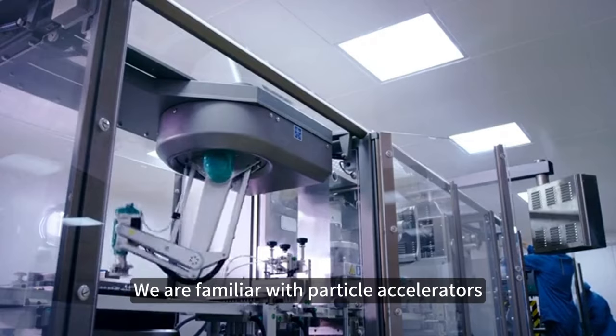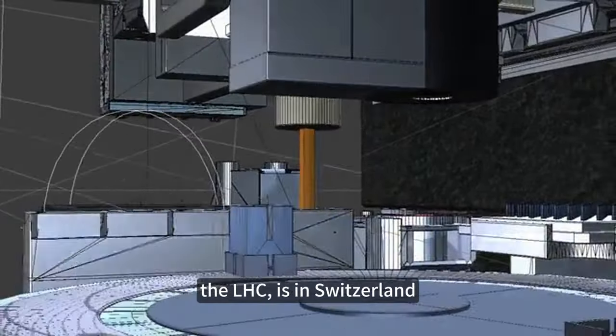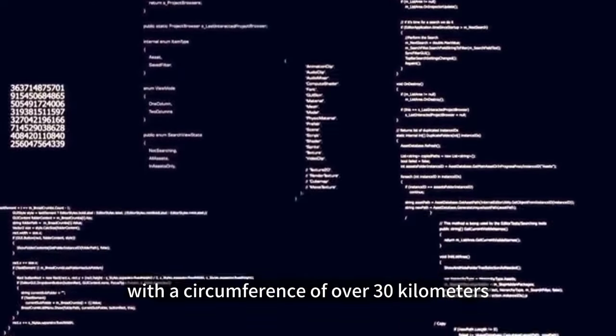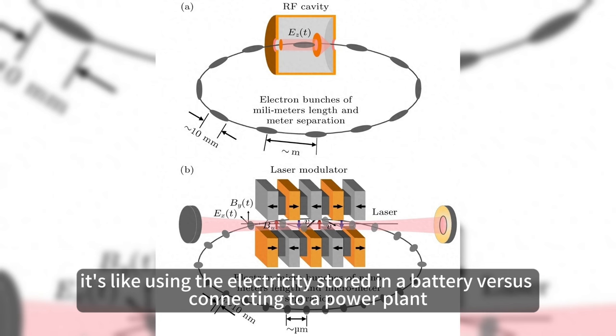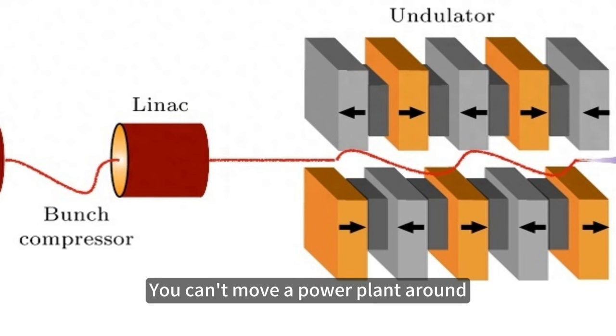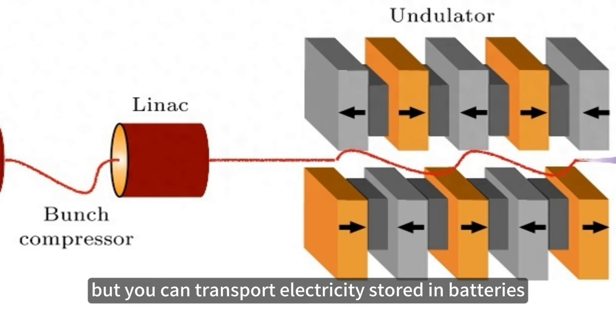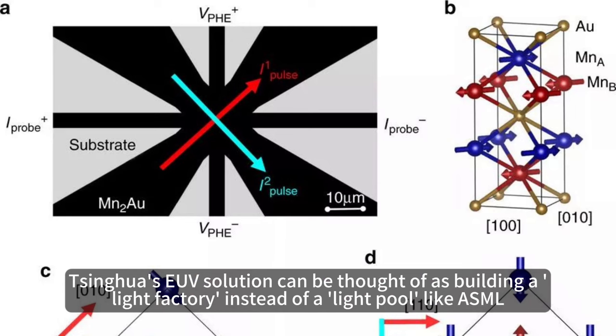We are familiar with particle accelerators, and the largest one in the world, the LHC, is in Switzerland with a circumference of over 30 kilometers. To draw a comparison, it's like using the electricity stored in a battery versus connecting to a power plant. You can't move a power plant around, but you can transport electricity stored in batteries. Tsinghua's EUV solution can be thought of as building a light factory instead of a light pool like ASML.